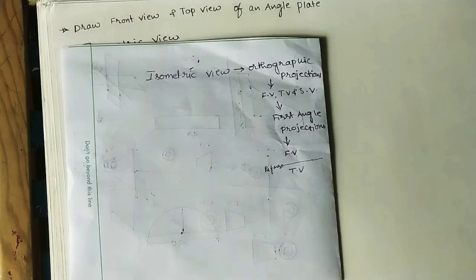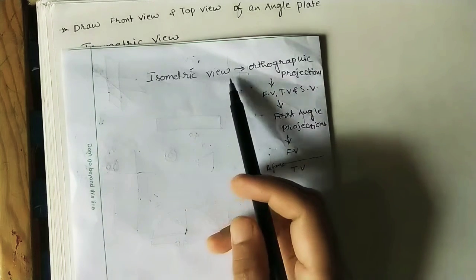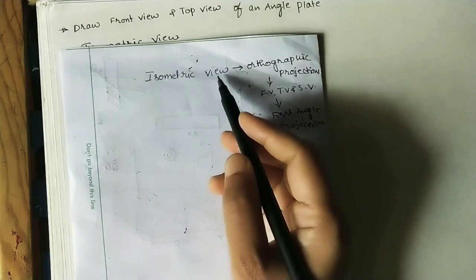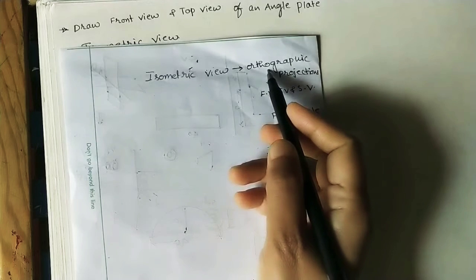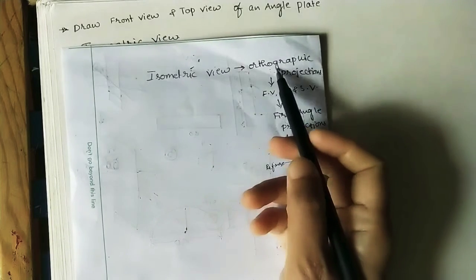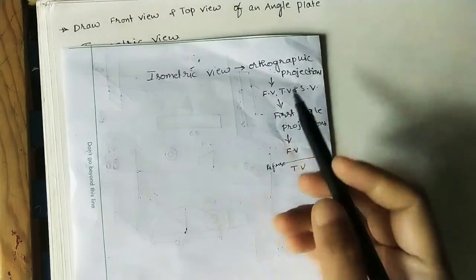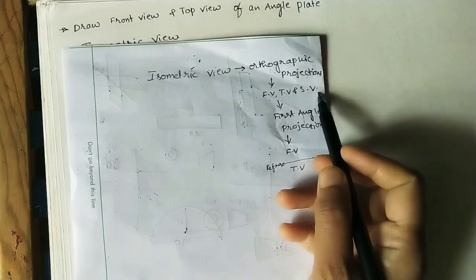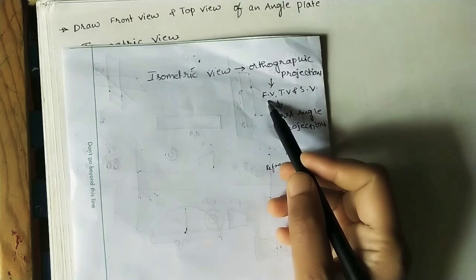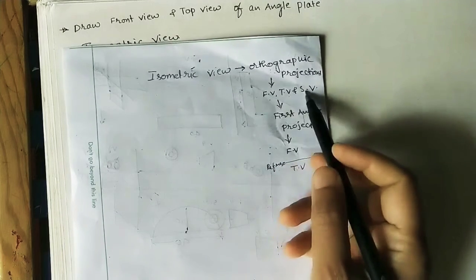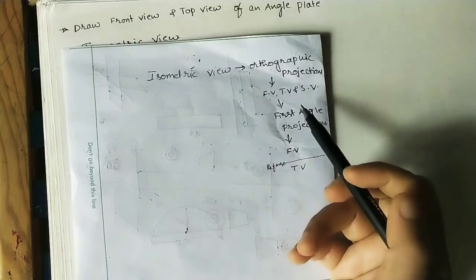Welcome to my channel. Let us discuss how to convert isometric view into orthographic projections. Isometric view is a three-dimensional view; we are converting that 3D view into a 2D diagram, which is the orthographic projection. In 2D we take the front view, top view, and side view of the object. These three are the orthographic projections — the two-dimensional views.